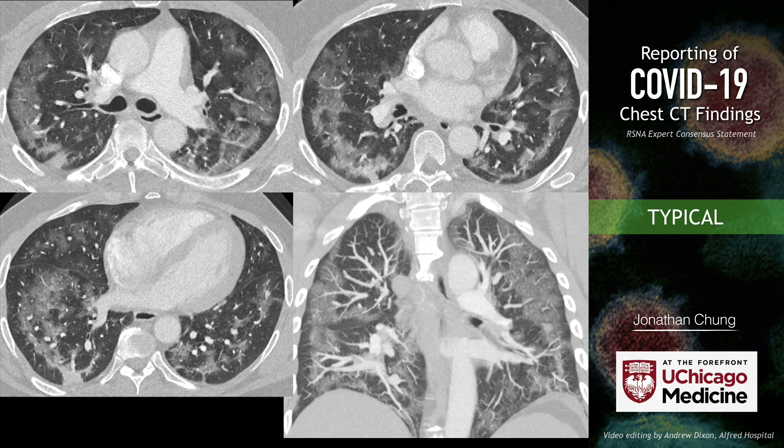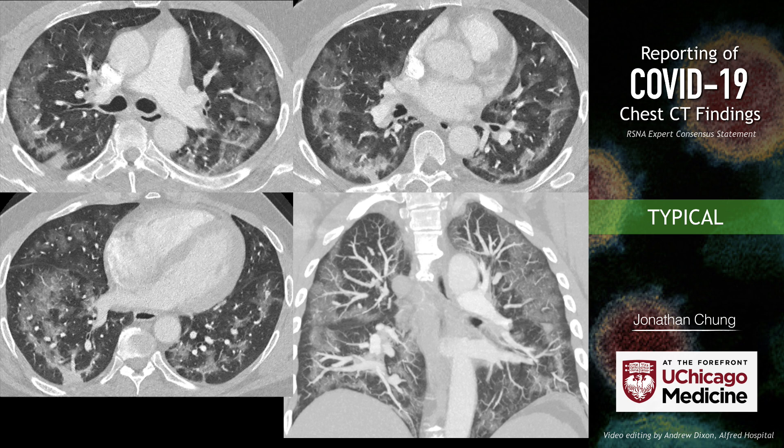Here's an example of the peripheral ground glass opacity we see in patients with COVID-19. This does have maybe a little bit of a basilar predominance, though that is not part of the consensus statement. But certainly peripheral, certainly ground glass, certainly bilateral — so this would be highly consistent with COVID-19. Here's an example from the Radiopaedia case file. Ground glass opacity in the lung periphery in a patient with suspected COVID-19 infection — this would be a typical imaging appearance.